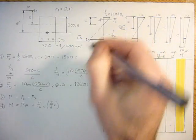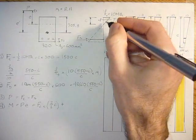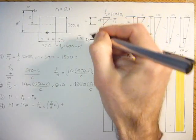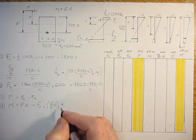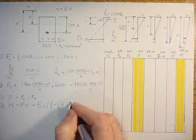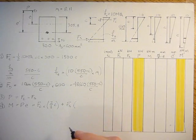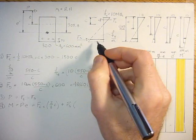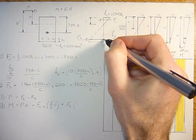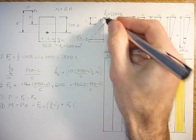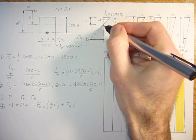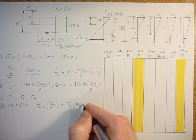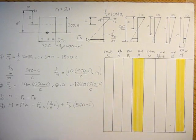And then plus, because they're both going counterclockwise. This is counterclockwise, this is counterclockwise, so we add them. Plus the force in the steel times this distance here, from here to here, which is this distance D, 550, minus this distance C. So 550 minus C.